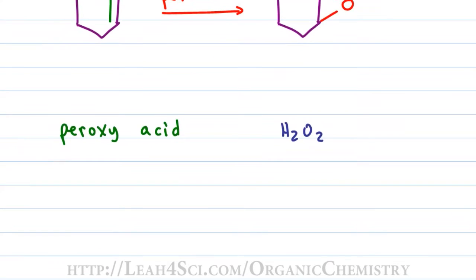In a peroxy acid, we have a molecule that looks like a carboxylic acid so we have R, C double bond O, single bond O and an H except that we have another oxygen between that OH. Oxygens are very unhappy when bound to other oxygen atoms and that makes them very unstable and therefore very reactive.